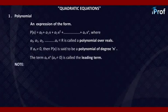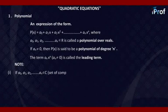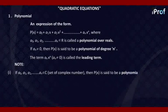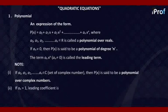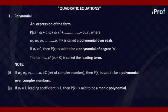Note the following points. First, if A0, A1, A2, and An belong to C, the set of complex numbers, then P(x) is said to be a polynomial over complex numbers. Second, if An is equal to 1, that is the leading coefficient is equal to 1, then P(x) is said to be a monic polynomial.